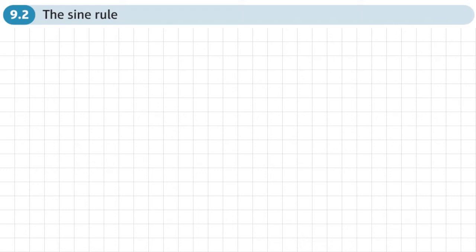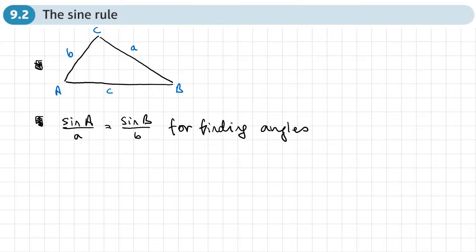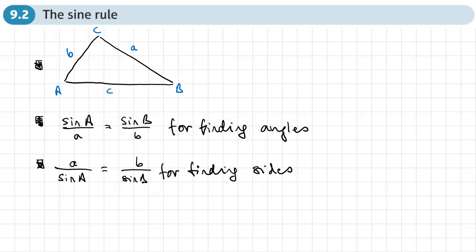This is the second section of chapter 9 on trigonometric ratios, and this section is about the Sine Rule. Here's our labelled triangle. We're going to use this form of the Sine Rule when we want to find angles, and this form when we want to find sides.